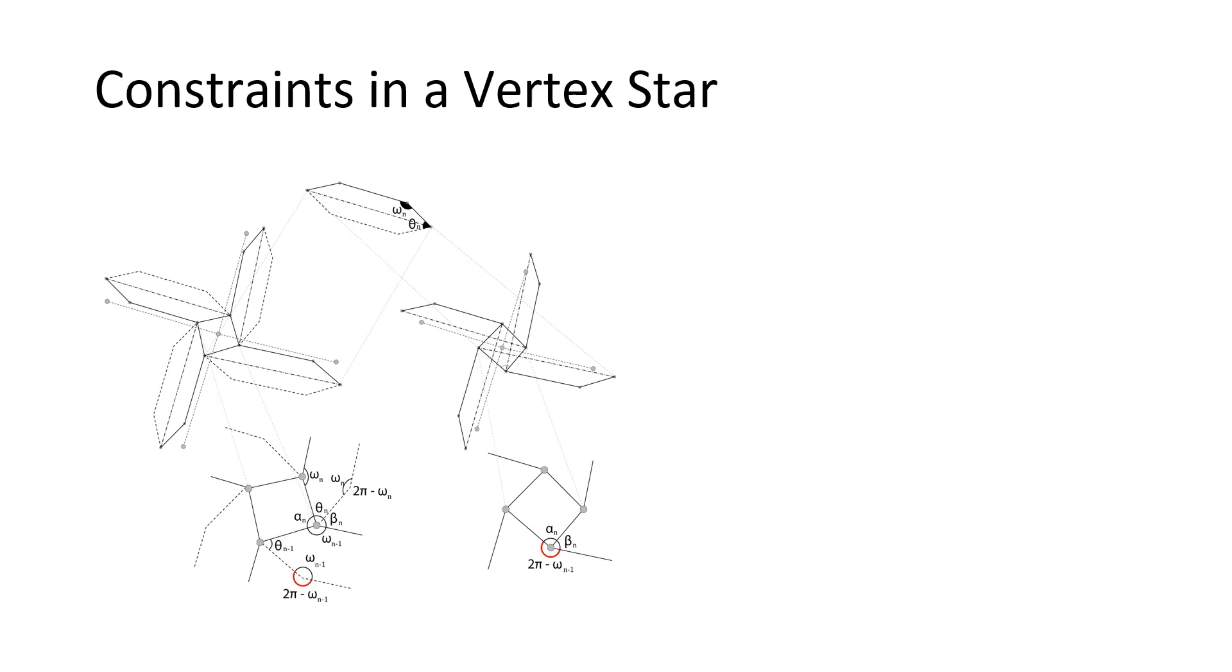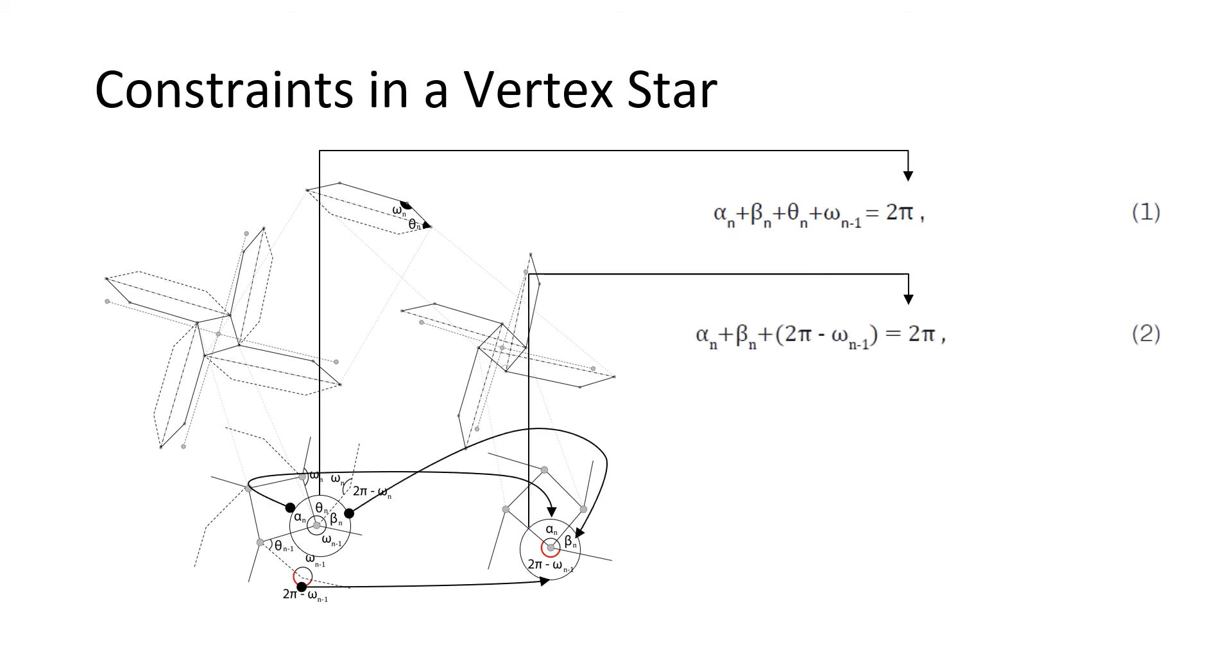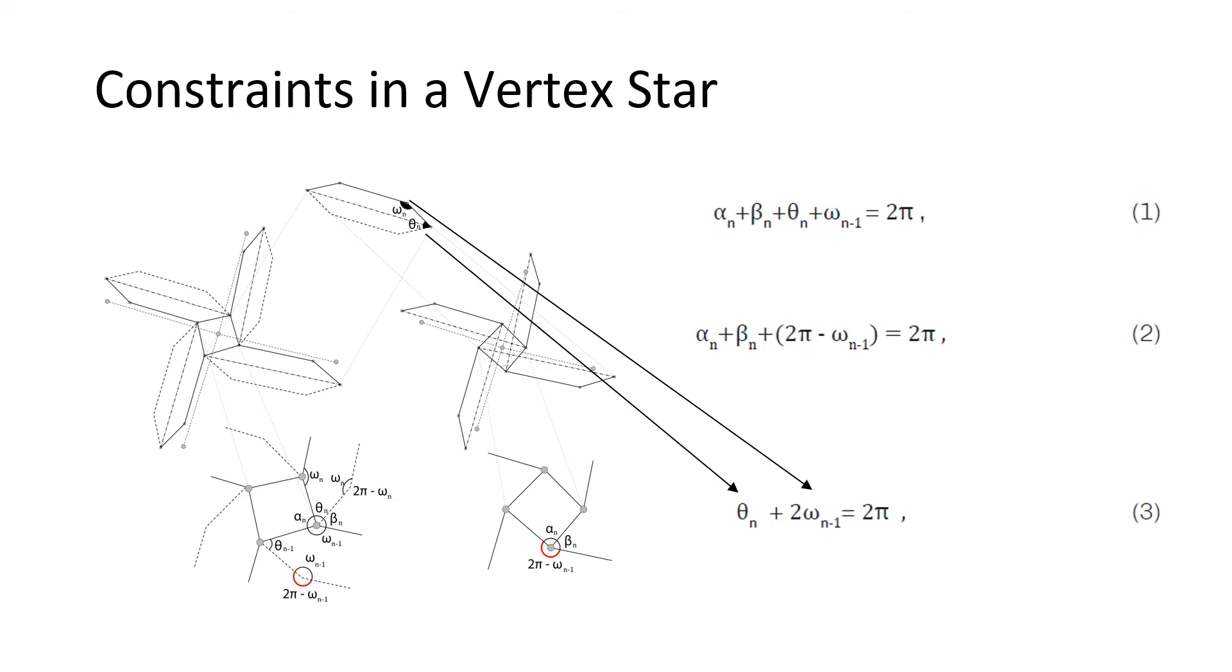We then turn our focus to the constraints around the vertex. Observing the angles around one hinge in an open and closed stage give us two equations, one and two, both describing the sum of a full angle. Subtracting equation two from equation one, we deducted equation three, which describes the angle agreement between two successive voids.